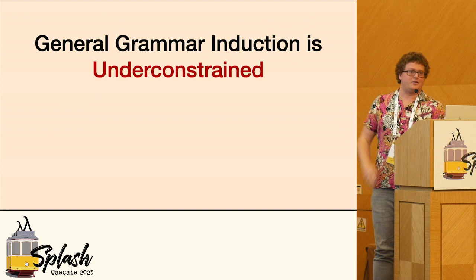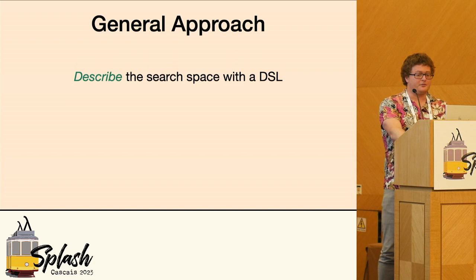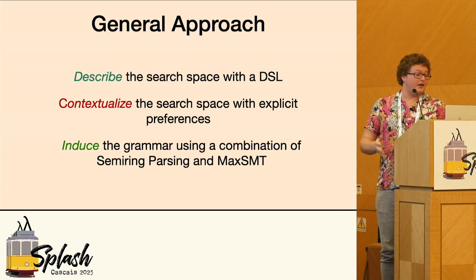So my solution is to constrain the search space. This is the general approach: we're going to describe the search space with a DSL. We're going to contextualize the search space by giving explicit preferences. And lastly, we're going to induce the grammar using some combination of semi-ring parsing and max SMT.